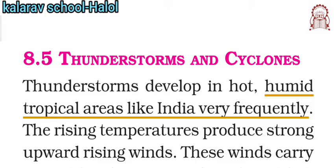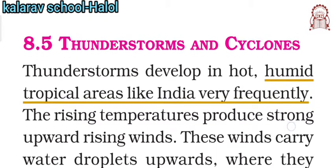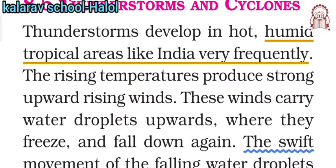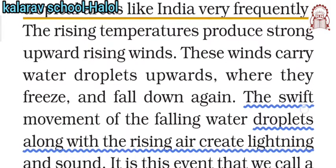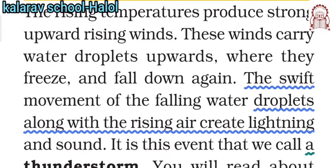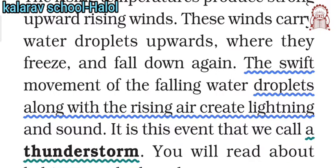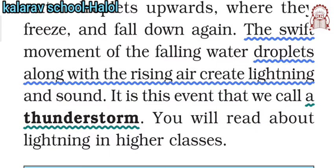Thunderstorms develop in hot, humid tropical areas like India very frequently. As the rising temperature produces strong upward rising winds, when these winds carry water droplets and move upward, they freeze and fall down again. The swift movement of the falling water droplets along with the rising air creates lightning and sound. This lightning and sound together with the water droplet fall on earth is called a thunderstorm.